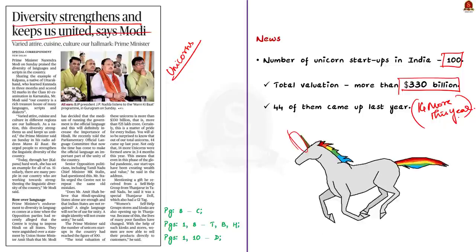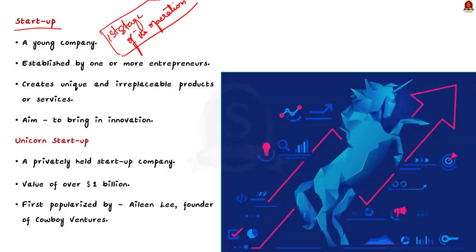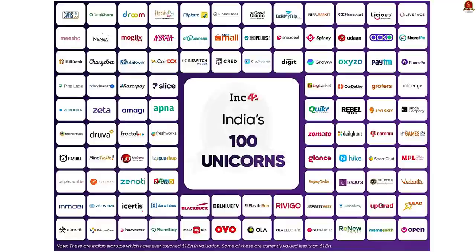Unicorns are a type of startup company. A startup refers to a young company established by one or more entrepreneurs to create unique and irreplaceable products and services, with the main aim of bringing in innovation. When a privately held startup company has a value of over one billion dollars, it is called a unicorn. This term was first popularized by venture capitalist Eileen Lee, founder of Cowboy Ventures. Examples of Indian unicorns include Paytm, Meesho, and Open Company.